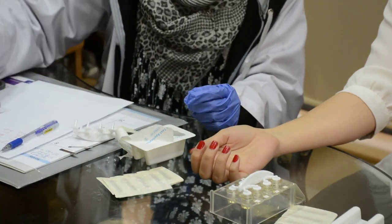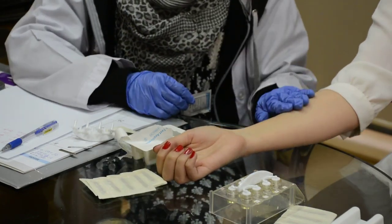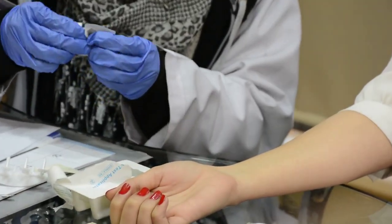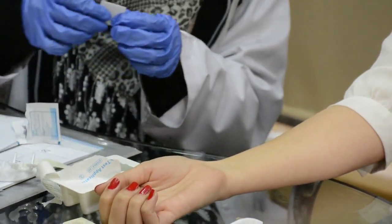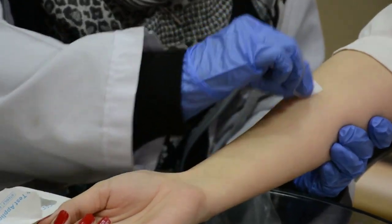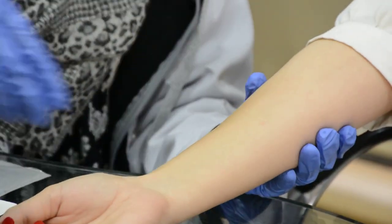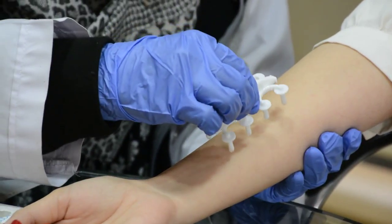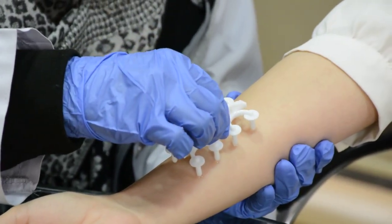The skin prick test is done on the forearm. A number grid is drawn on your arm using a marker pen. The multi prick applicator containing 8 different allergens is used to prick the outer layer of skin using light pressure. This facilitates the allergic response.